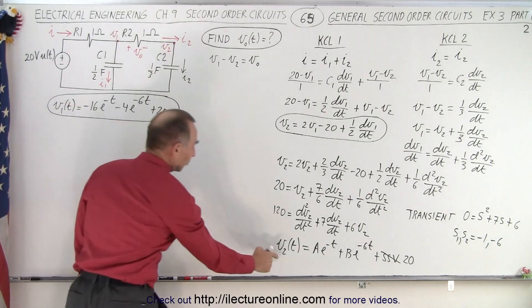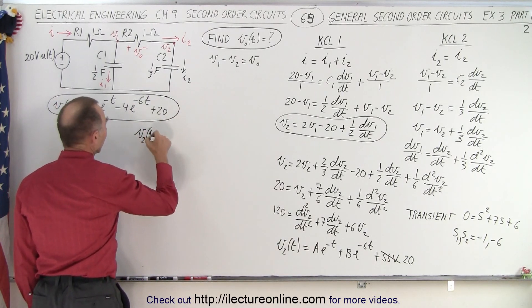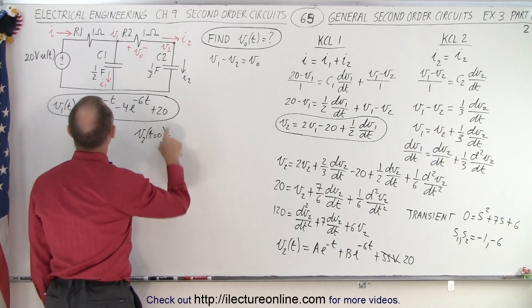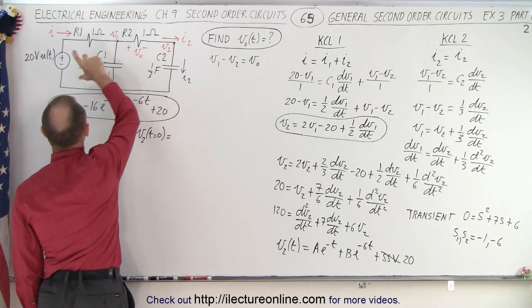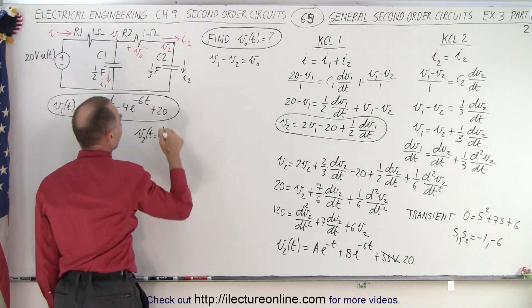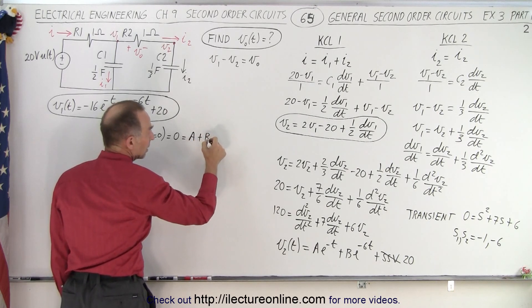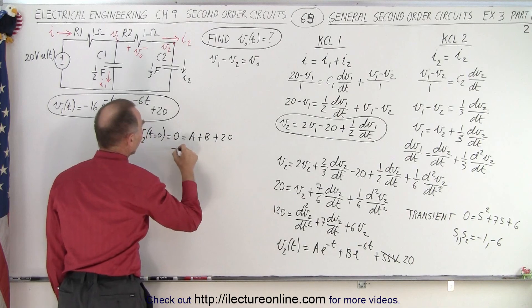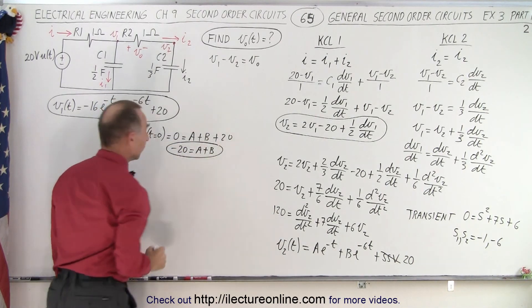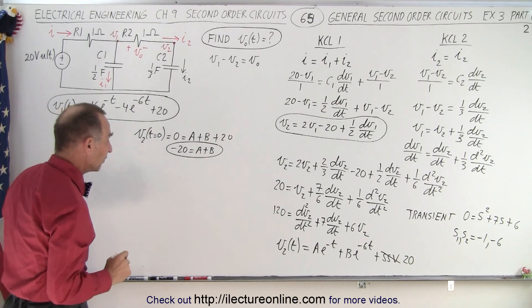So the equation looks exactly the same as it did for V1 — the difference is the initial conditions are going to be different. First, let's set time equal to zero in this equation. We can say that V2 at time equal to zero: the voltage there will be zero as soon as we turn on the voltage. So that equals zero, which gives us A plus B plus 20, which means minus 20 is equal to A plus B. So that first equation looks exactly the same. So far it's like a repeat from what we did before.